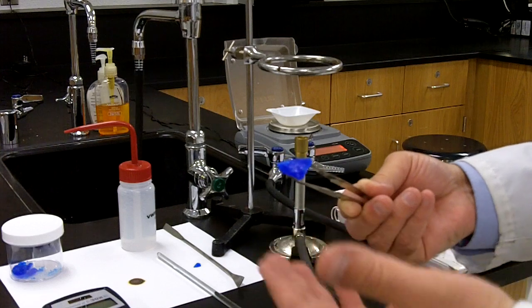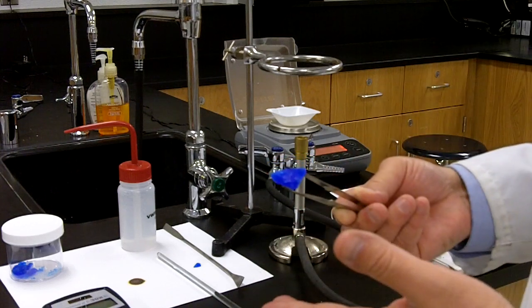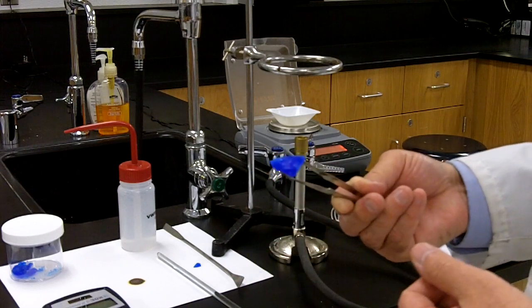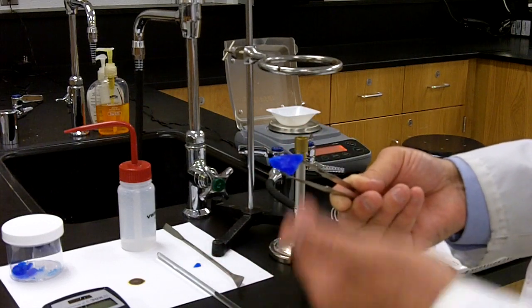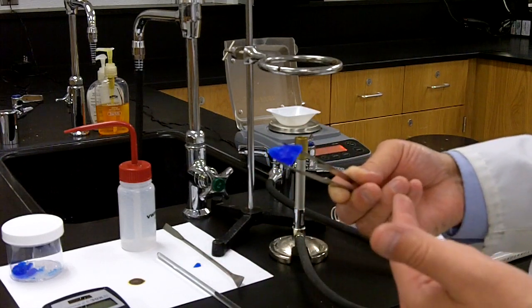In fact, every formula unit of copper 2 sulfate pentahydrate contains five molecules of water. And so it's going to be our job today to experimentally determine the percentage of water in a hydrate.